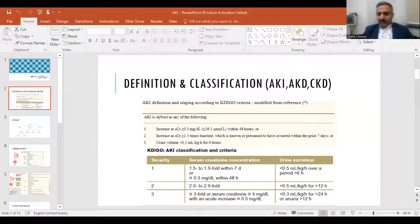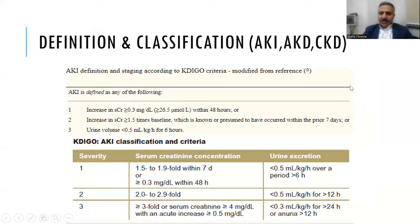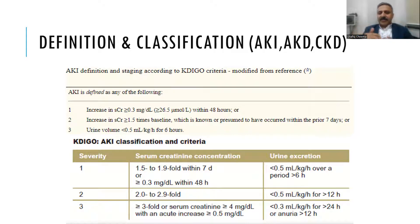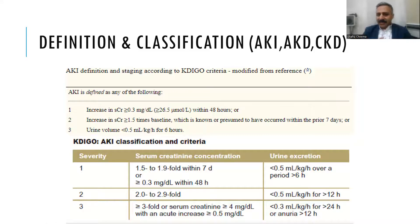Let's talk about how we define acute kidney injury. Acute kidney injury has been defined as a sudden rise in creatinine or fall in GFR. But this definition could vary — someone might say a rise in creatinine from one to two is a rise. So KDIGO has defined acute kidney injury as when creatinine has increased by 0.3 mg/dL from baseline within 48 hours, or if the rise in creatinine is more than 1.5 times the baseline within the last seven days.